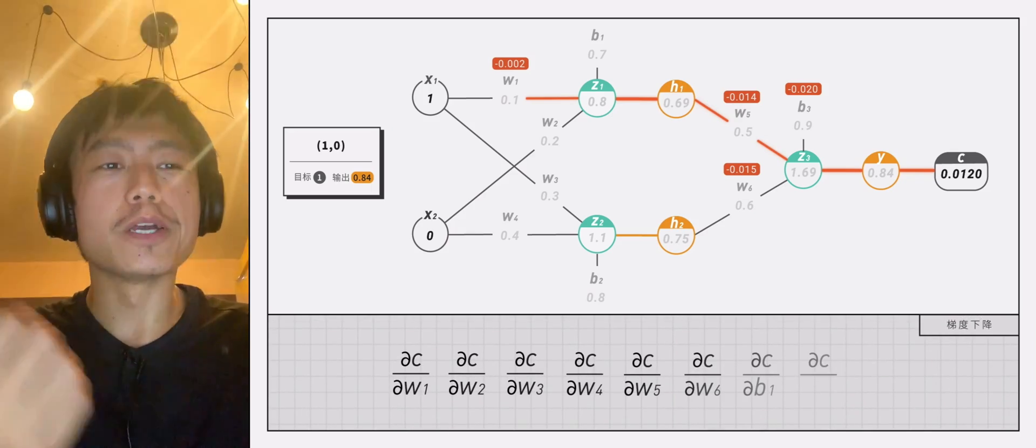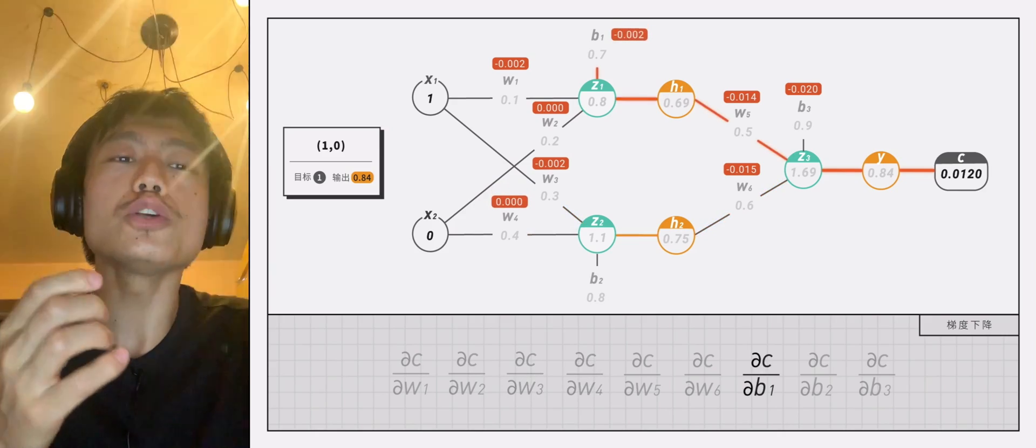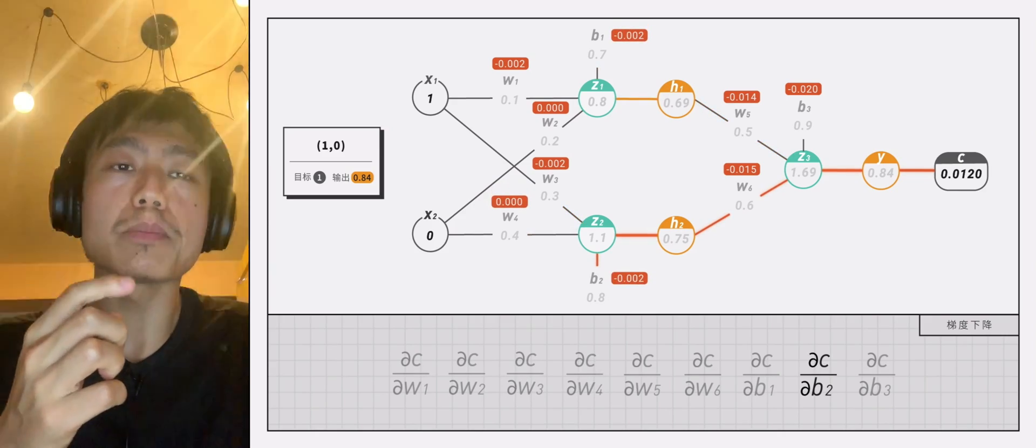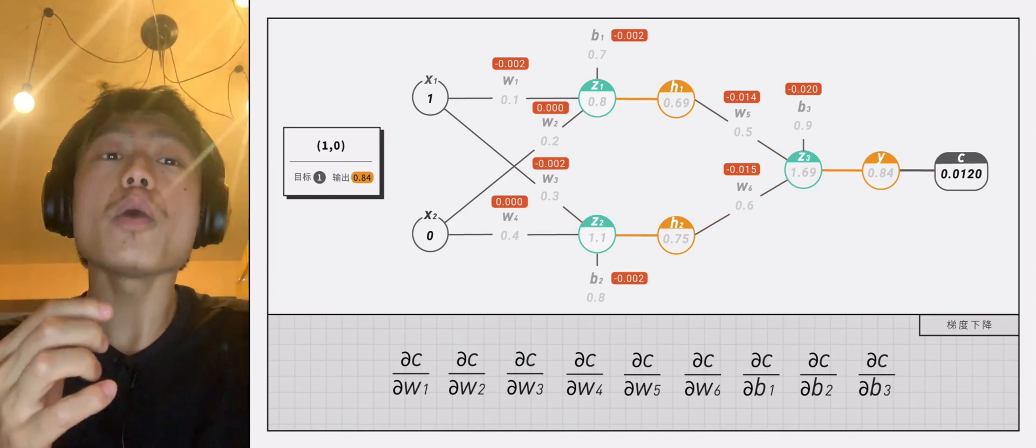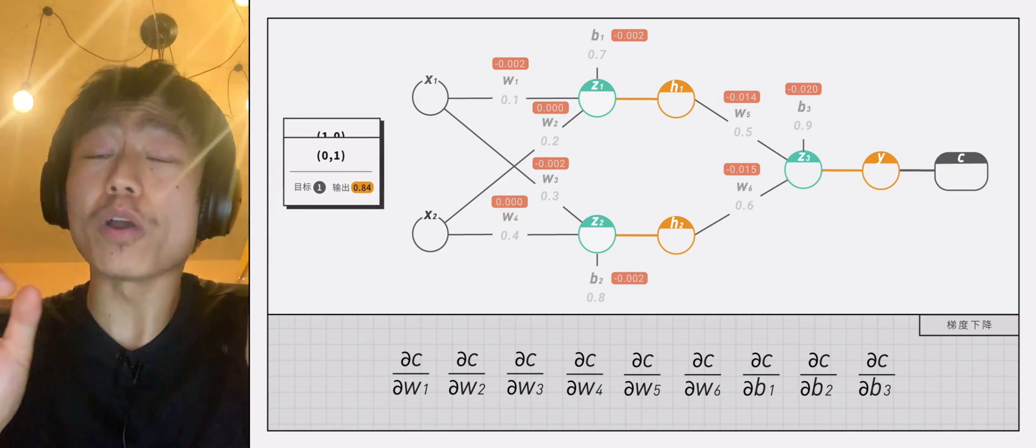By analogy, we can find the partial derivatives of c to w1, w2, w3, w4, w5, w6, b1, b2, and b3. In this case, only one data point is entered.